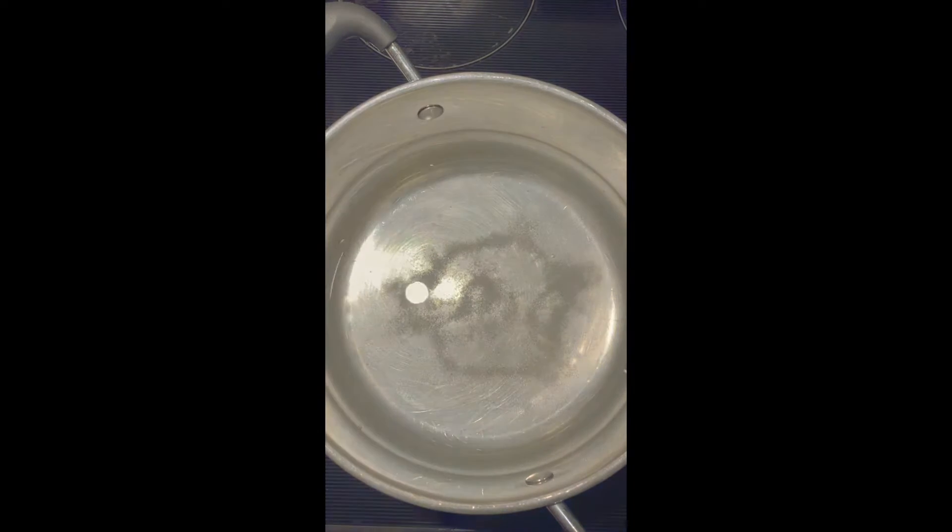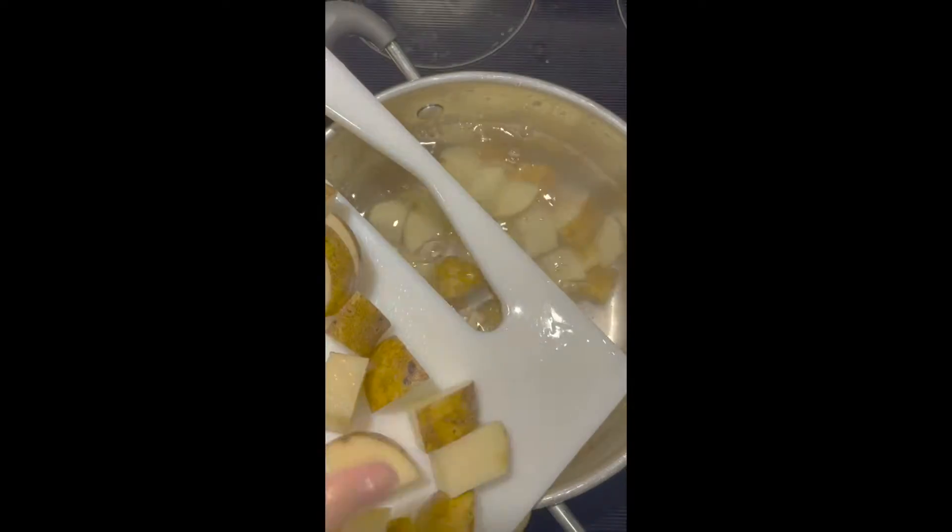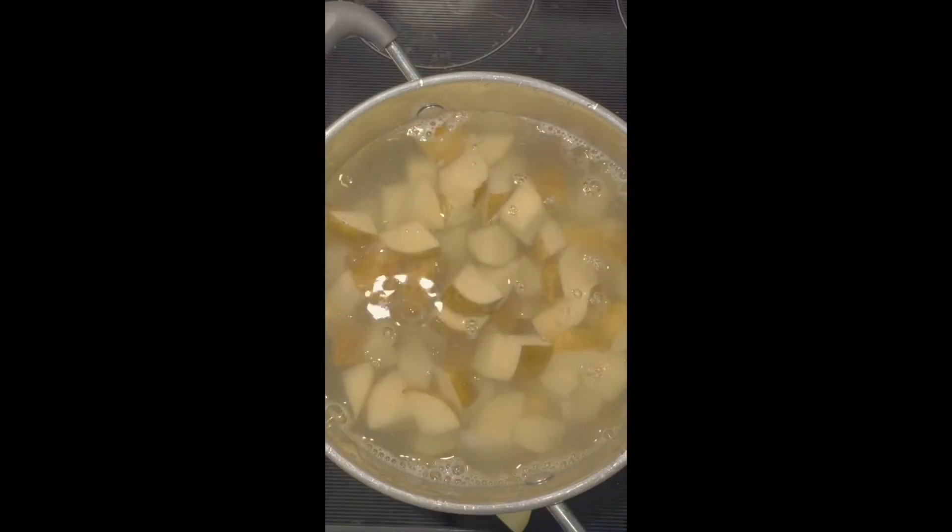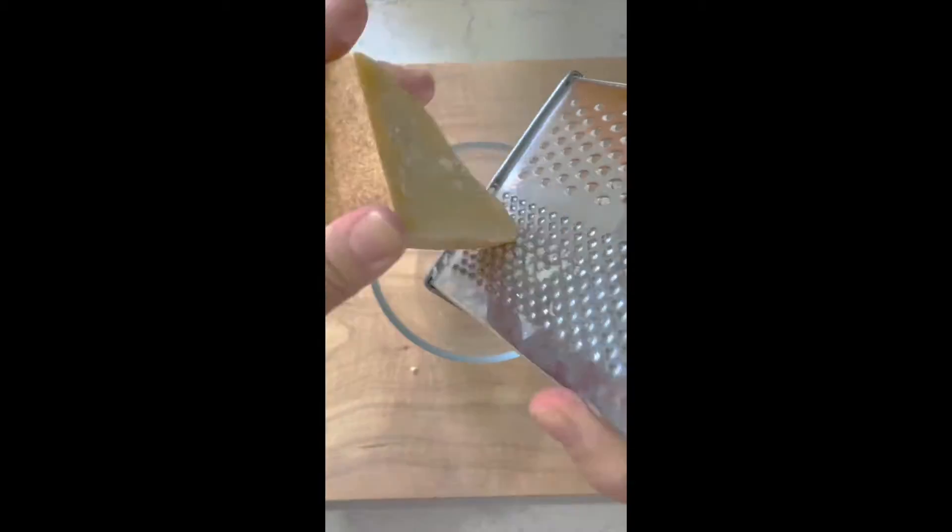Add some salt to a pot of water and then add the cubed potatoes. Boil them until just tender when pierced with a fork. Grate some parmesan cheese.